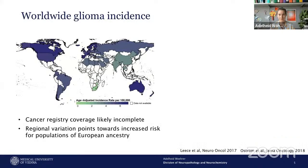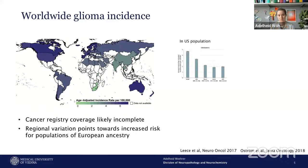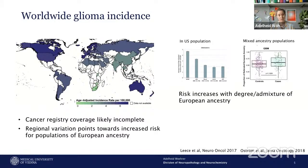Looking at worldwide geographic variation, we have the highest incidence rates in populations of European ancestry — prominently in Europe, Northern Americas, and Australia. This is confirmed in the US population, where we see the highest rates in non-Hispanic whites, followed by Hispanics and Black patients. Interestingly, Hispanics who develop gliomas tend to have a higher proportion of European ancestry in their family trees.